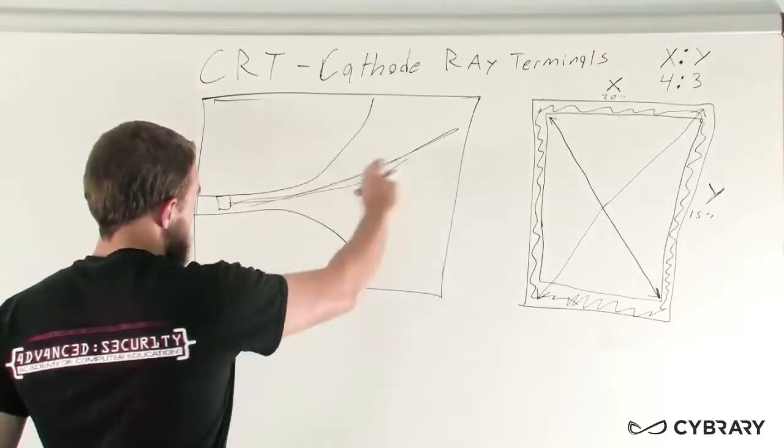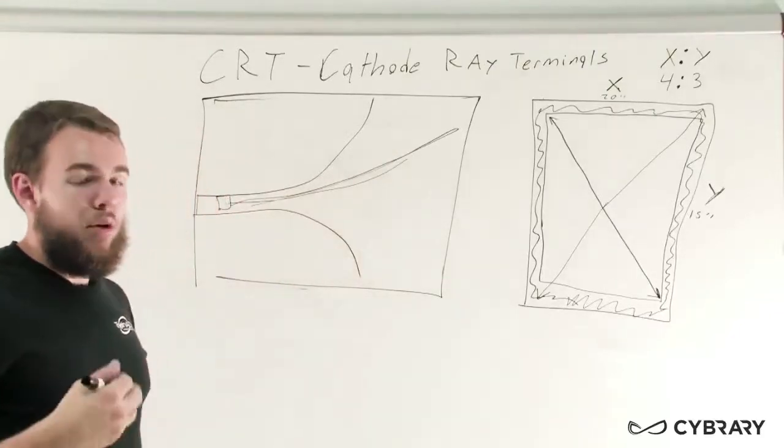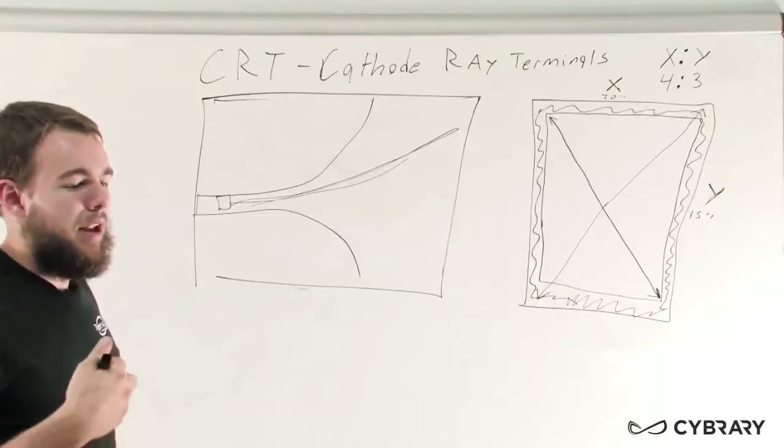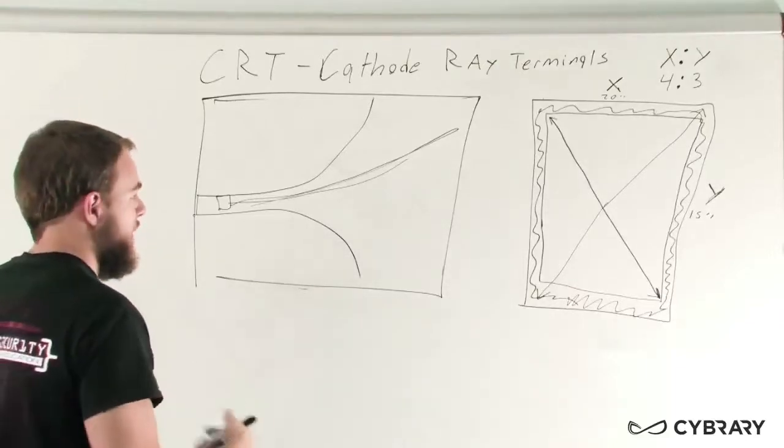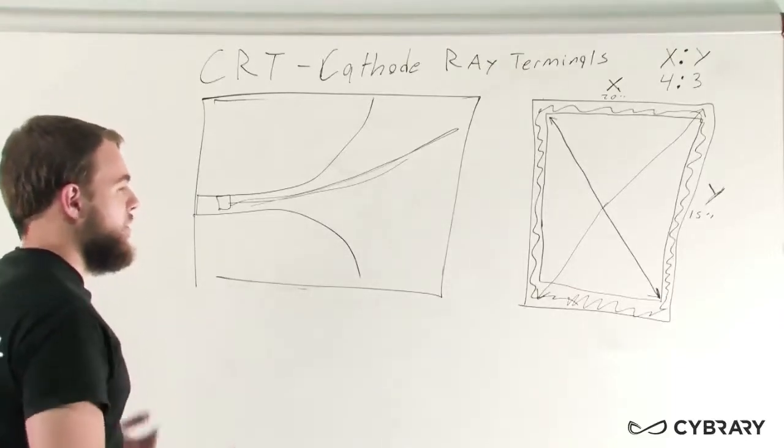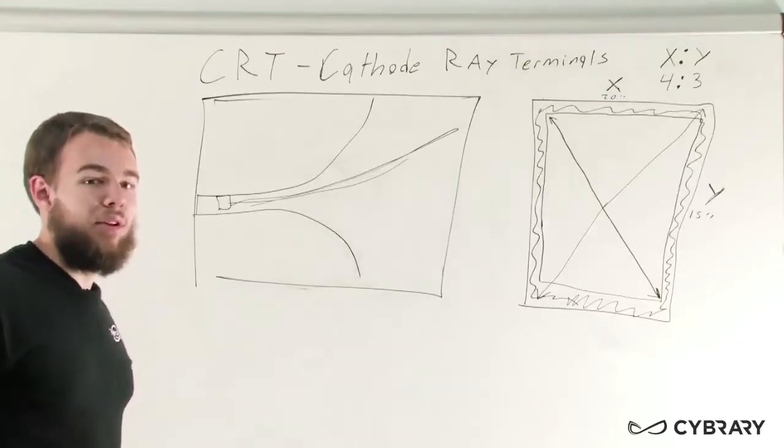At 60 refreshes per second, you may notice a little bit of a flicker, but at about 72 refresh rate or higher, that's the point where your human eye will not be able to see it.